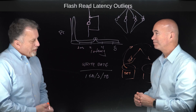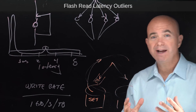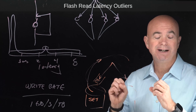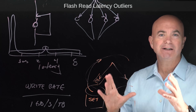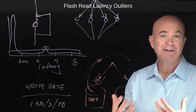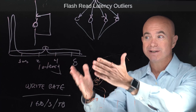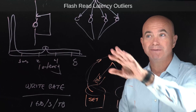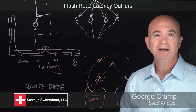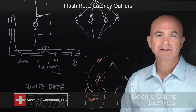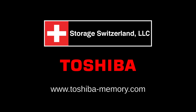Well, there you have it. If you're looking for these sort of flash read latency outliers, this is a really good example. And if maybe you've been struggling with this and you didn't know what it was, this is probably what could be the problem if you're in this type of an architecture. I'm George Crump, Lead Analyst with Storage Switzerland. Thank you for joining us.